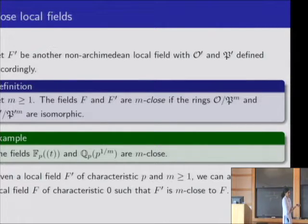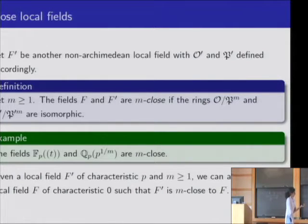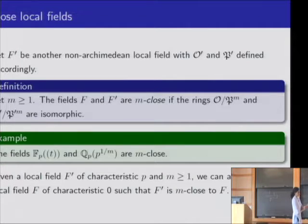Is the example for m equals 1 obvious? Yes, because the residue fields are isomorphic. The residue field of Q_p is Z_p mod p Z_p, which is just Z mod p.